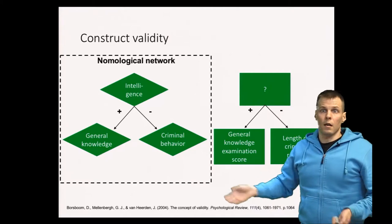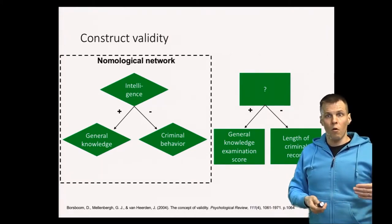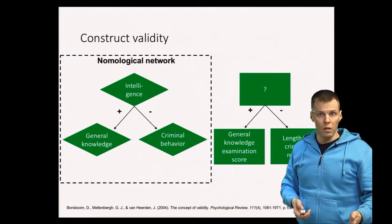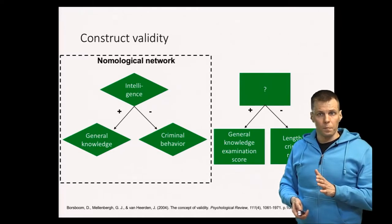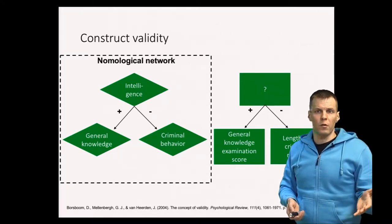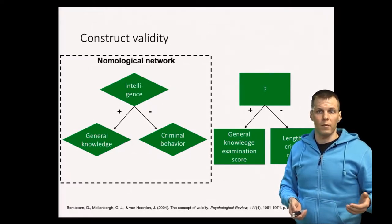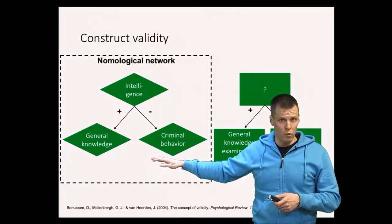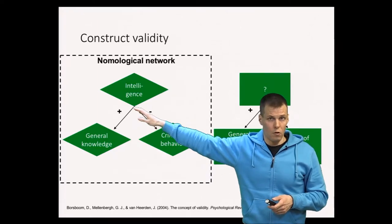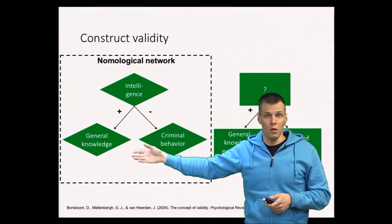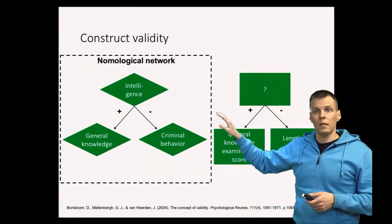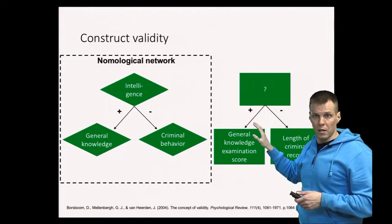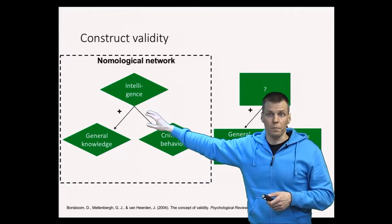This is a somewhat useful way of assessing validity. If your scores don't behave as expected, that's reason to either doubt the validity of those scores or doubt the correctness of your theory. However, it is very limited — consider a green field of study where the construct hasn't been theorized much. Where exactly would you get the nomological network? If you're the first person to introduce a new construct, how can you argue it has established relationships with other constructs?